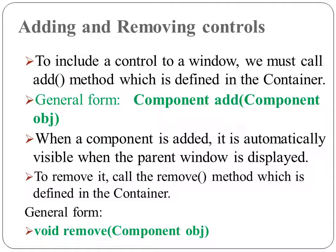To include a control in a window, we have to call the add() method, which is defined in the Container class. We pass the object of the component to the add() method. If a component is added to a window, that component is automatically visible when the parent window is displayed. To remove a control, we call the remove() method, also defined in the Container class. The general form is: void remove(component reference).